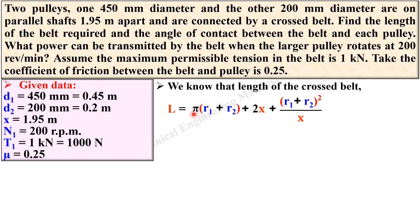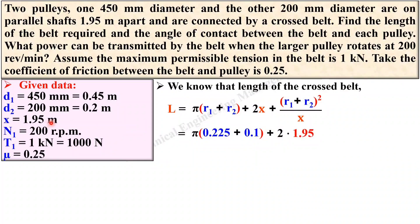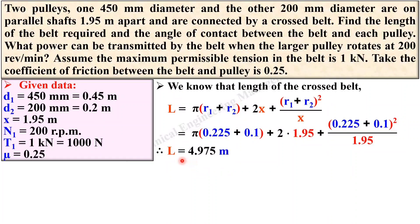Since you have d1 and d2, you can find r1 and r2: r1 = d1/2, r2 = d2/2. Substitute these values and x into the cross belt length equation. Simplify to get the length of the cross belt. The length is always in meters — this is your first answer.